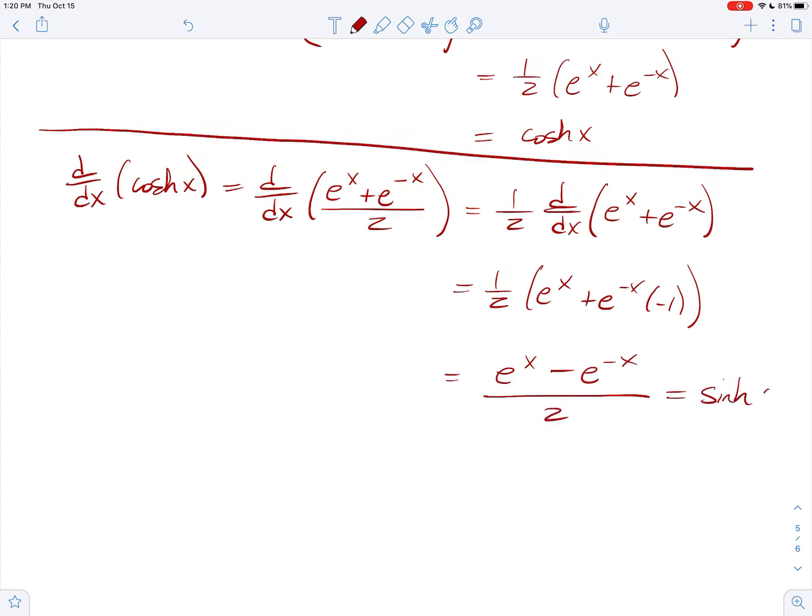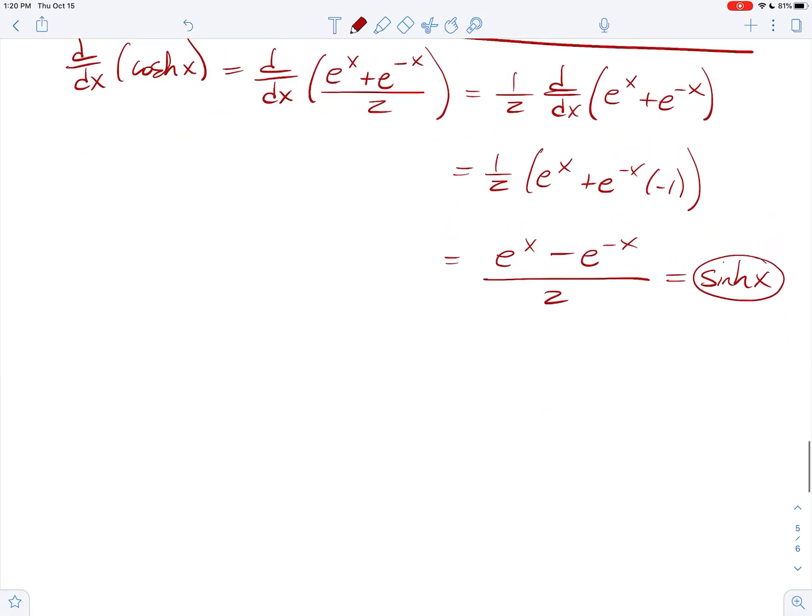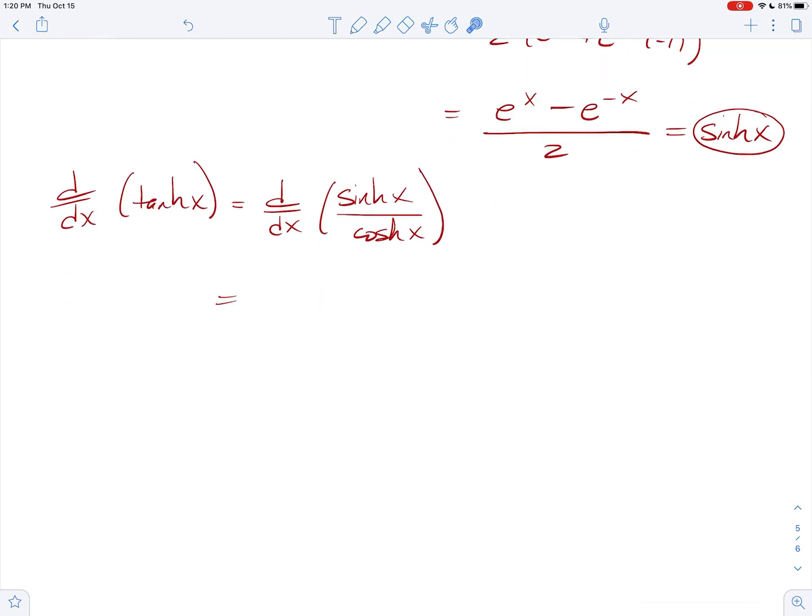And then I'll do the derivative of tanh of x. This is the derivative of the sinh of x over the cosh of x. Quotient rule says take the derivative of the top—derivative of sinh is cosh—times the bottom is a cosh squared...